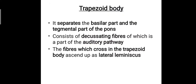The trapezoid body separates the basilar part and the tegmental part of the pons. It consists of decussating fibers, of which a part of the auditory pathway is formed. The fibers which cross in the trapezoid body ascend as the lateral lemniscus.